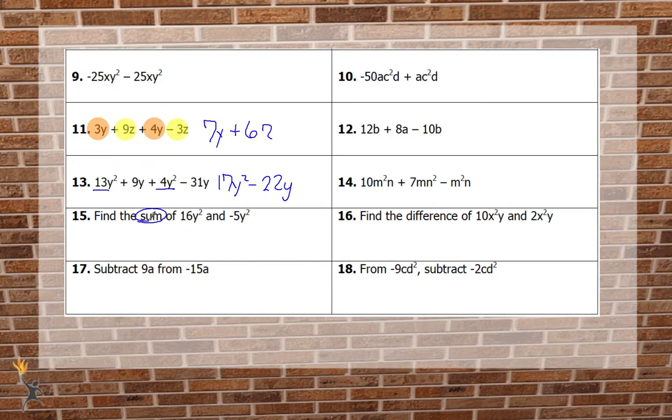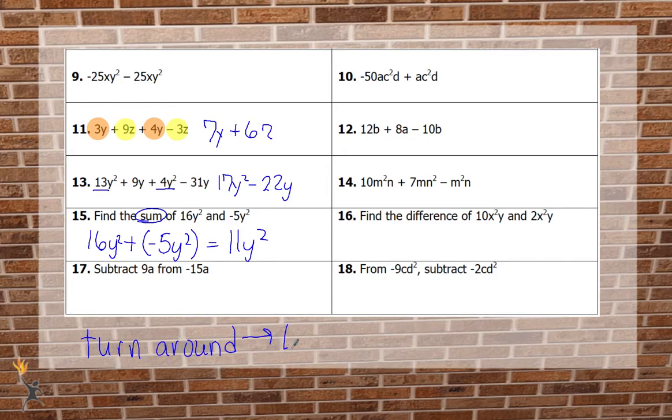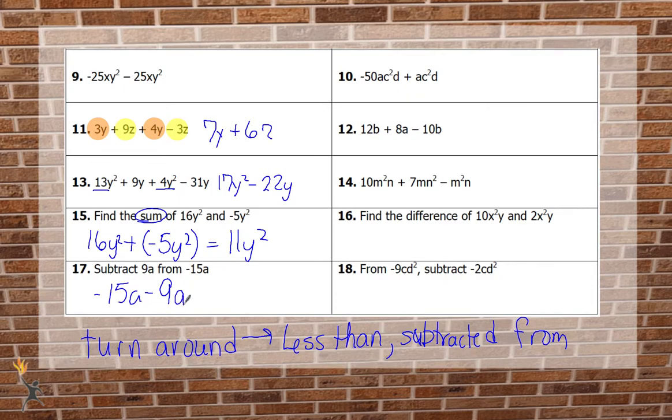Now let's take a look at the word problems. Well the sum tells us it's addition. So it's 16y squared plus a negative 5y squared to give us 11y squared. Now these next couple of subtraction ones, you've got to remember something. There were these special phrases in subtraction called the turnaround phrases. One was less than. That was the most common one we looked at before. But there was a less common one that might show up as subtracted from. So if we take a look at number 17, we have subtract 9a from 15a. So it's a turnaround phrase. It's negative 15a minus 9a. To work through that answer, that means we have two negatives. We're going to add that negative. So we're going to get negative 24a. Be sure you keep your eye out for these turnaround phrases.